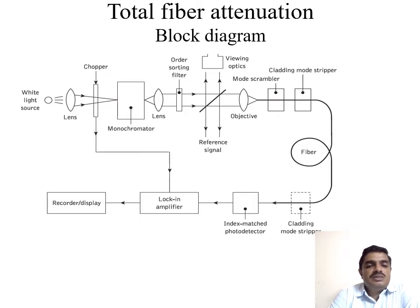The purpose of the chopper is to vary the light source according to our requirement. The chopper is also connected to a lock-in amplifier to give the input pattern. Then we use a monochromator. The purpose of the monochromator is to act as a prism to scatter the light. The scattered signal is given to a lens which acts as a filter to remove unwanted noise and improve light signal quality.